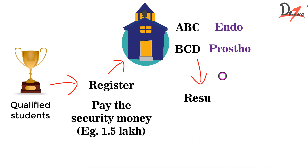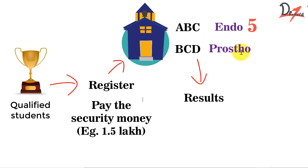After locking preferences, you wait for the results. Depending on your marks, you will be allotted a seat. For example, if college ABC had five seats in endodontics and all five students who preferred it had more marks than you, you will not get that seat — you will get the second preference. This is why I said do not deposit token money to any college. Everything depends on how many students apply for a seat and their marks relative to yours. Token money is unofficial, black money — don't give it. The DGME governing body handles everything.